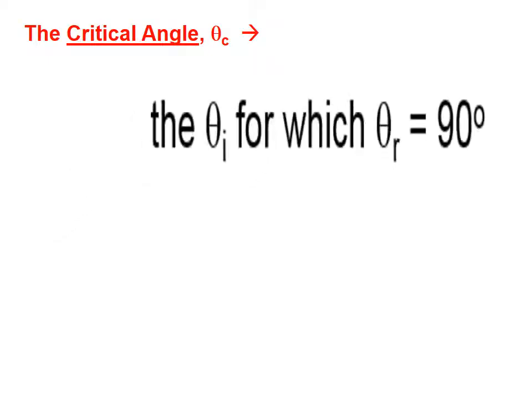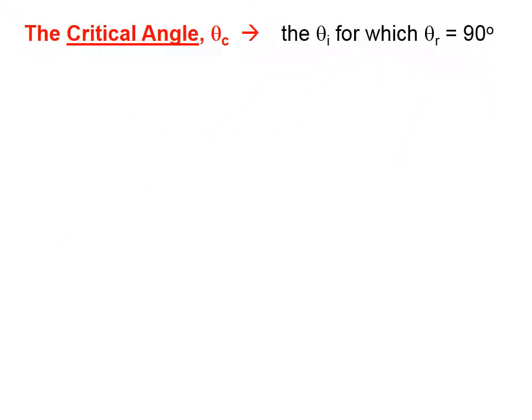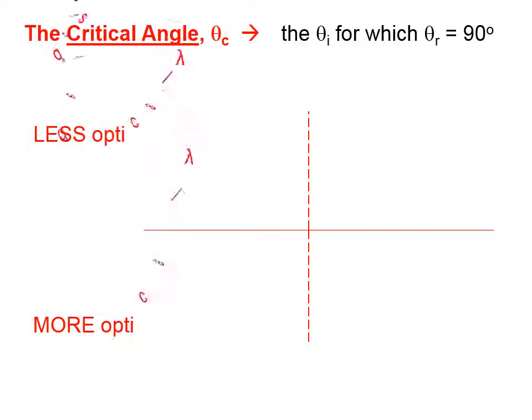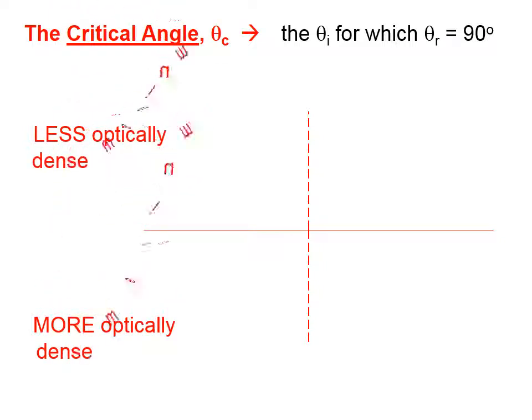The critical angle, which we symbolize theta sub c, is the incident angle for which the angle of refraction will be 90 degrees.